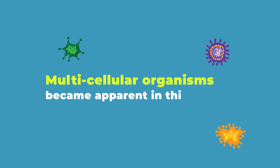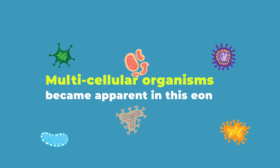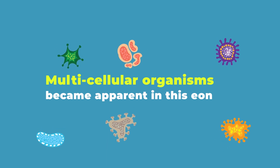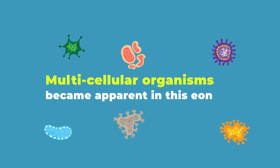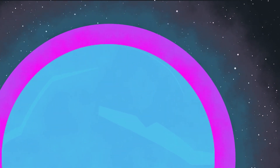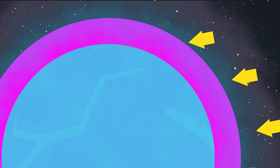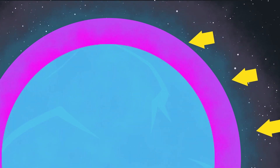Multicellular organisms became apparent in this era. As oxygen filled the atmosphere, Earth's ozone layer thickened. Before the presence of an ozone layer, life was restricted to shallow water, because water shielded harmful radiation — that's where life existed. Eventually, a thicker ozone layer enabled life to diversify on land.